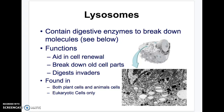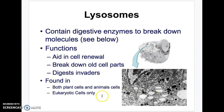Lysosomes are super important — think of them as Lysol. They contain enzymes that break down molecules and clean up waste and old cell parts. They can also digest invaders, using enzymes to kill anything invading the cell. Lysosomes are only in eukaryotes, but both plants and animal cells have them.